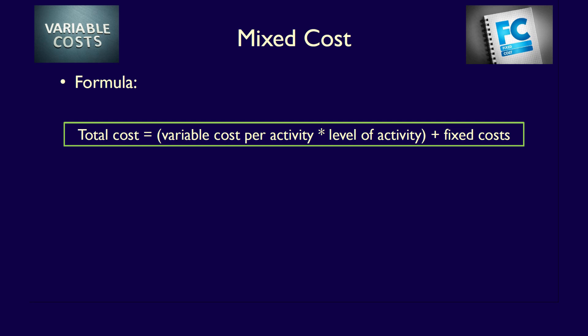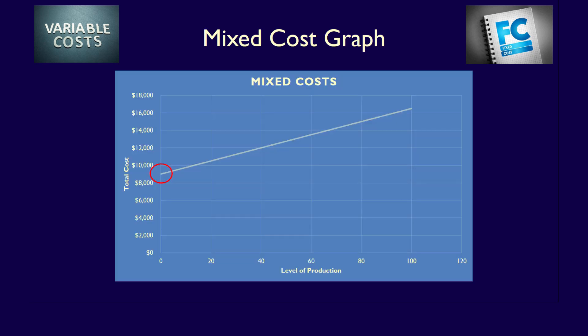The formula for a mixed cost is as follows: total mixed costs are equal to variable cost per activity multiplied by the level of activity plus fixed costs. The graph of a mixed cost shows a line which intercepts the y-axis — the total cost axis — at a point equal to the total fixed costs.